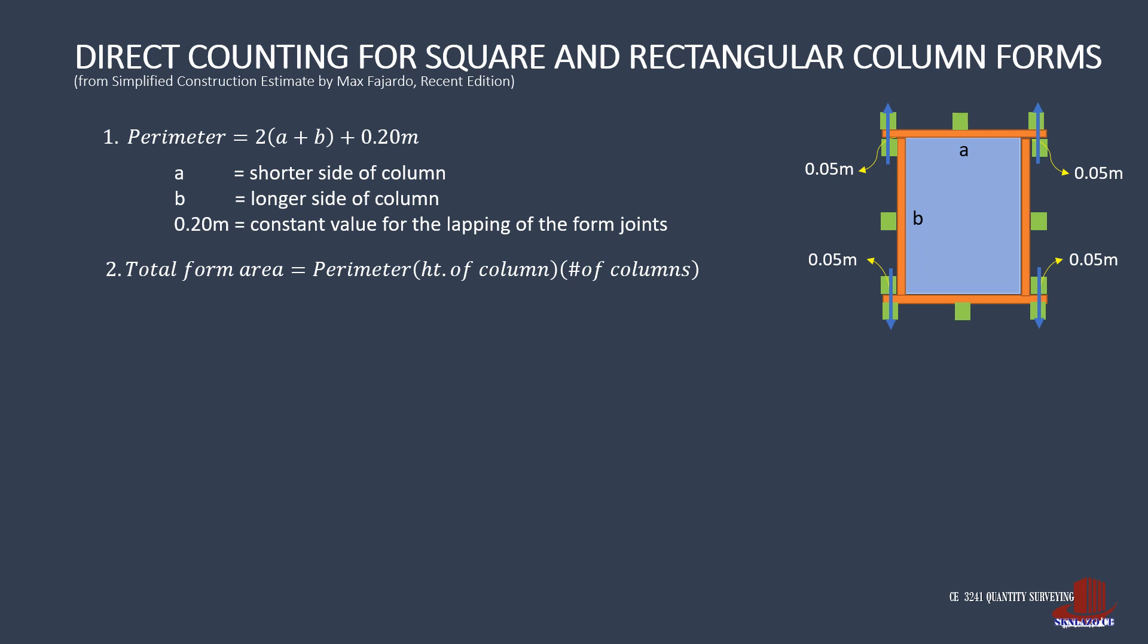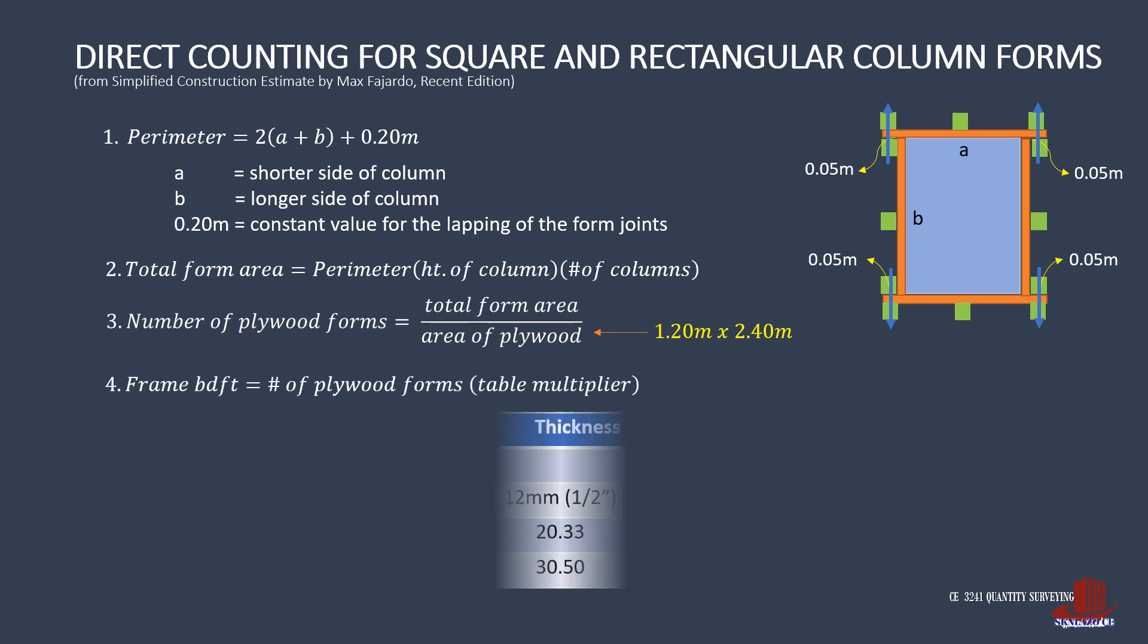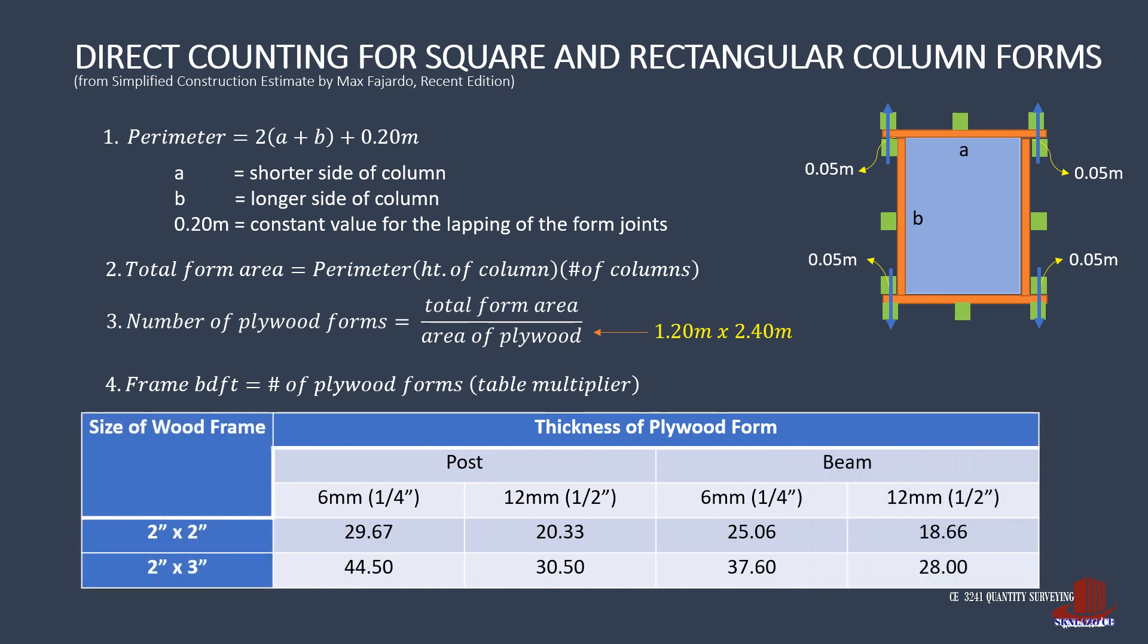With the area identified, the number of plywood forms can be determined by dividing it by the effective area of a single plywood. In this case, we use 4 by 8 feet plywood size as it is more commercially available. After the plywood, estimate the board feet needed for the frame, and that is where the table gets into the solution.